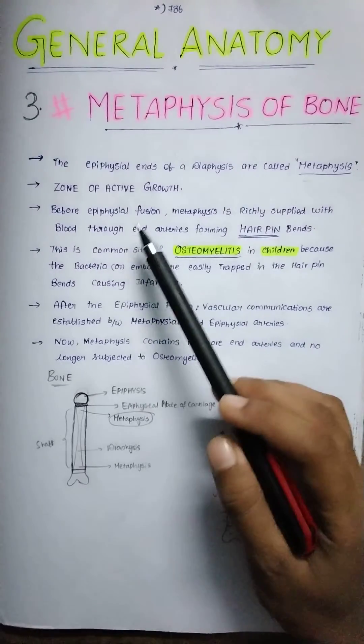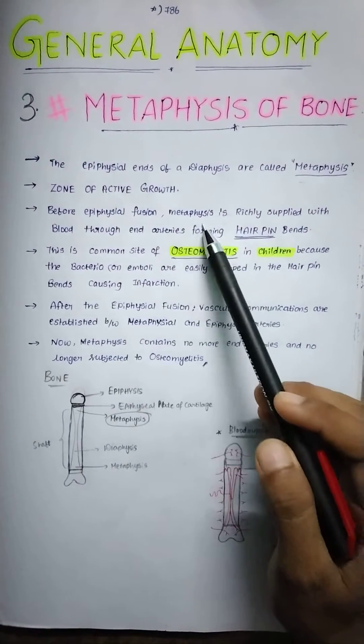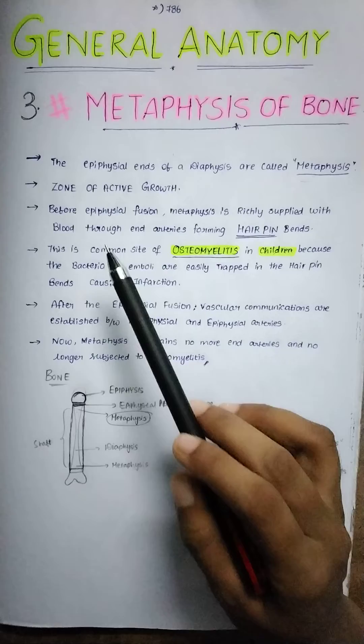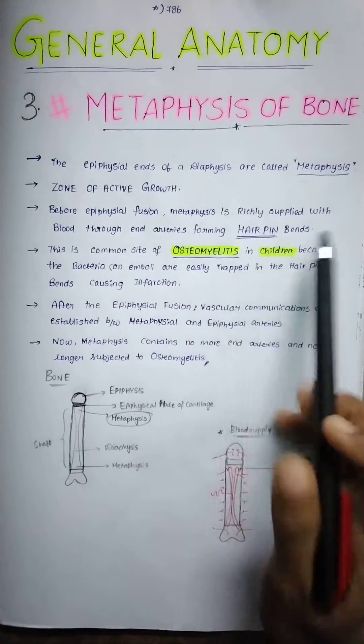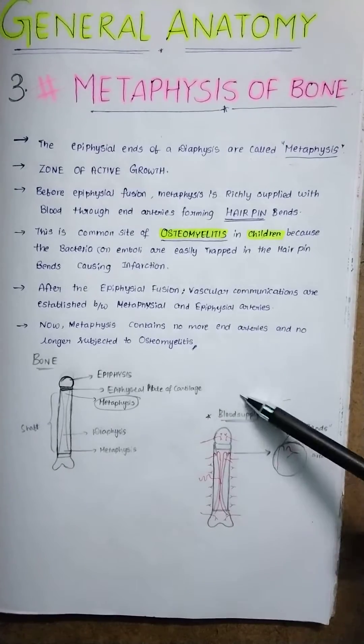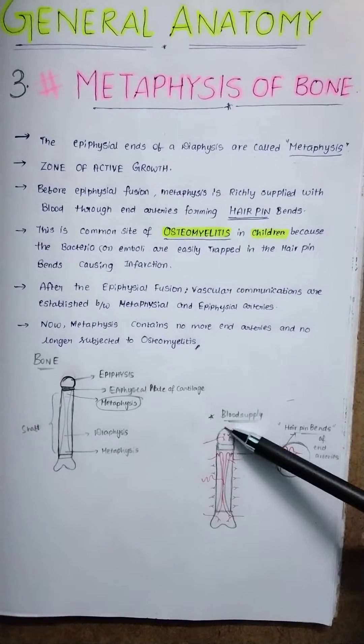Before the epiphysial fusion, the metaphysis is richly supplied with blood through the end arteries forming hairpin beds. Now, what does this mean? Let me draw the blood supply. Here we are seeing the epiphyses.